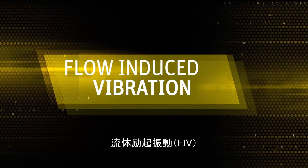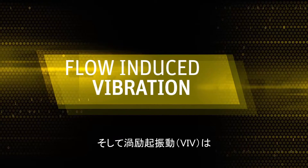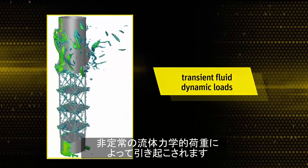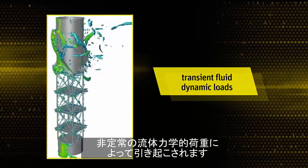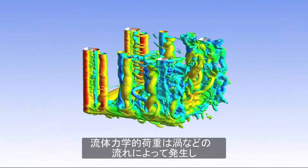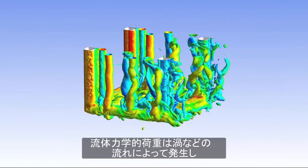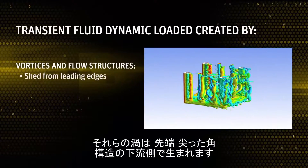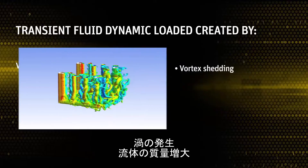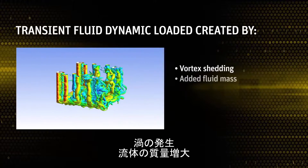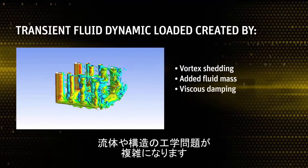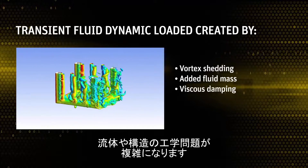Flow induced vibration (FIV) and vortex induced vibration (VIV) are structural responses created by transient fluid dynamic loads. Vortices and other flow structures creating these fluid dynamic loads arise from vortices shed from leading edges, sharp corners, and in the wake of structures. The vortex shedding, as well as the added fluid mass and viscous damping, create complex engineering fluid and structural problems.